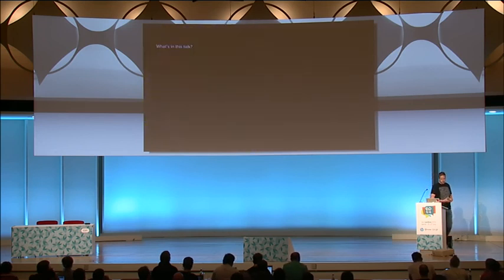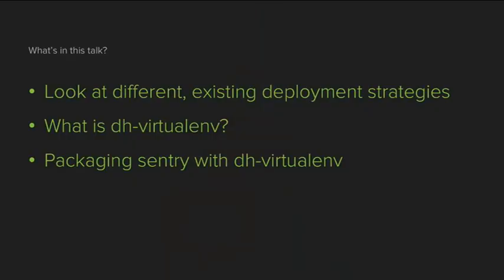This talk will be in three sections. First, we'll look into existing deployment strategies on Debian/Ubuntu-based machines. Then we'll look at what DH VirtualEnv actually is and how it differs. And finally, we'll go through an example of how you package software — specifically Sentry, because it's not a simple piece of software, which makes it a good example.